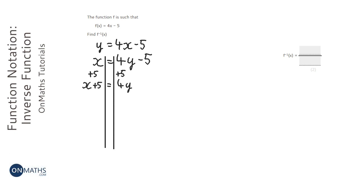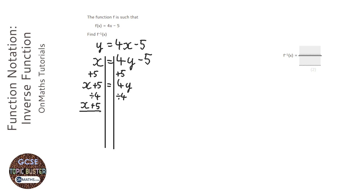Next I need to divide both sides by 4, and the way of doing that really is just with a fraction. So y is x plus 5 over 4.